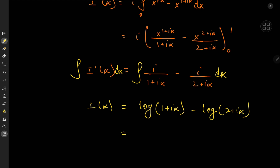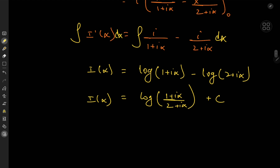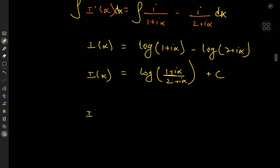This is quite nice to evaluate because we just need logarithms — specifically the principal branch of the complex logarithm. Integrating with respect to alpha yields on the left I(alpha), and on the right we have log(1 plus i alpha) minus log(2 plus i alpha).